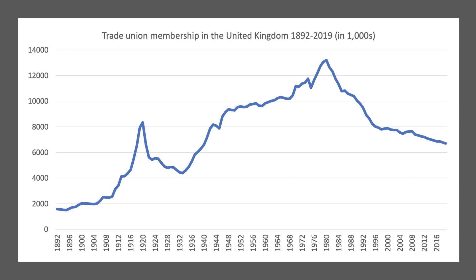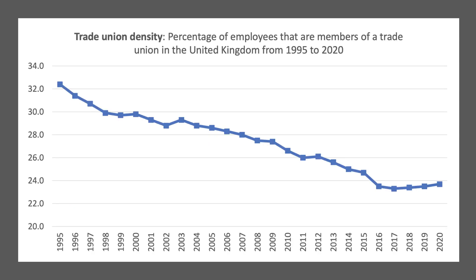Union membership has been falling more or less continuously ever since — not just to do with the employment legislation, but to do with the changing labour market, changing patterns of employment, the decline of heavy engineering, heavy industry, coal mining and what have you. Employment in the UK is higher at 34 million, of which only about 6.5 million people are members of a trade union.